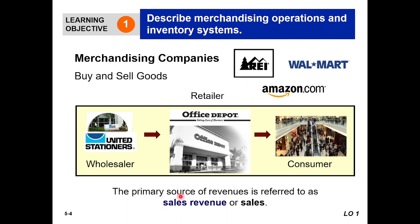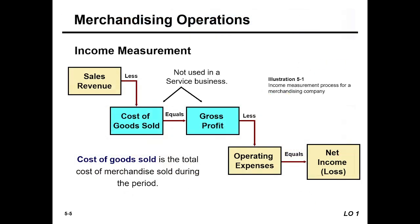For merchandising companies, the primary source of revenue is referred to as sales revenue, or simply 'sales.' When a company sells goods, the resulting income is called sales revenue. This is the main revenue of merchandising companies.